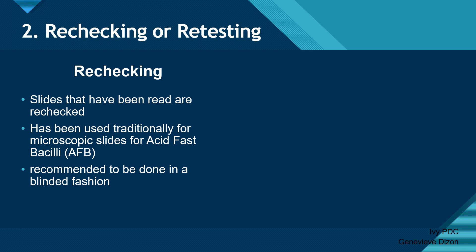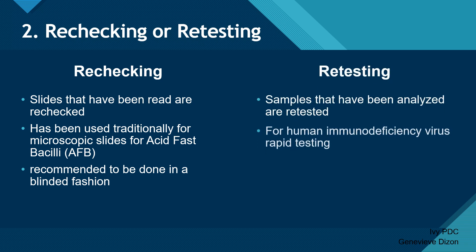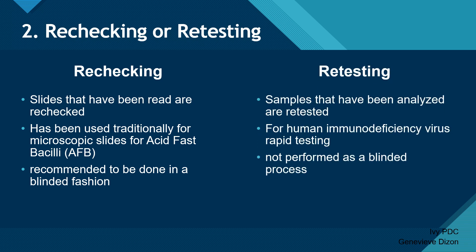The second form is retesting, which is when samples that have already been analyzed are tested again. This is usually done for human immunodeficiency virus rapid testing in situations where it is performed outside the traditional laboratory or by persons who are not trained in laboratory medicine. For retesting, the blinded process is not performed.